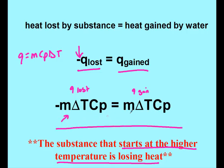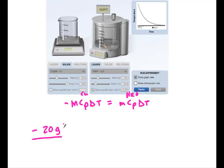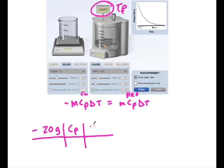We're going to use the calorimetry equation because we have two substances. We use the simple specific heat equation when we have one substance; with two substances, we use the calorimetry equation. Copper was losing energy, so the copper information goes on the left side. We have a negative, and our mass of copper was 20 grams. We don't know its cp. Our final temperature — which is always the same for both substances — is 23.25 minus 200, giving me negative 176.75 degrees Celsius.